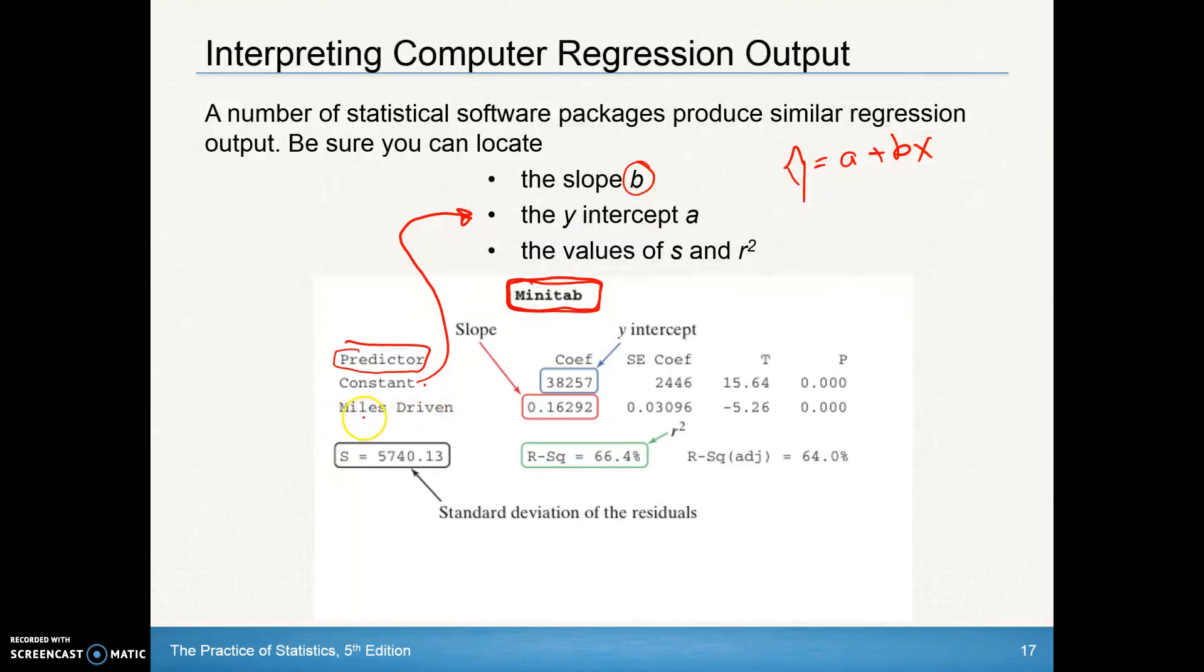In the data that we've got here, this happens to be data about miles driven. This coefficient, this means the coefficient of our variable miles driven is 0.16292. That is our slope. So if I was creating that equation, I'd go y-hat equals 0.16292x is the slope part that's attached to the x. Again, our coefficient of our constant term is our y-intercept, that's 38,257. So that a value, that y-intercept, is 38,257 plus our slope of 0.16292x.